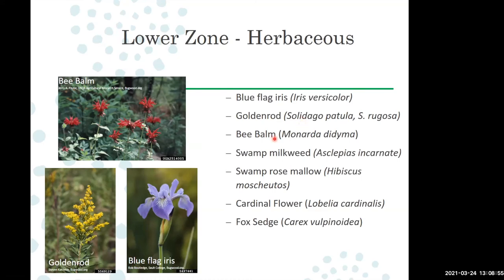Bee balm can be used but I'd recommend caution — if you've grown it in other gardens, you'll know it often gets powdery mildew. One of the best things you can do to limit that is to place it in full sun so the foliage dries out as quickly as possible. Swamp milkweed, swamp rosemallow, cardinal flower, and fox sedge are plants that won't do as well in normal garden spaces — this is an opportunity to use plants that want wetter, moister soils typically requiring a lot of irrigation.